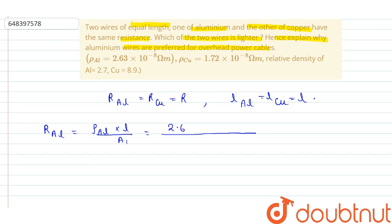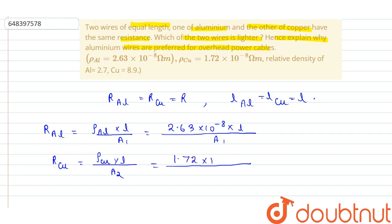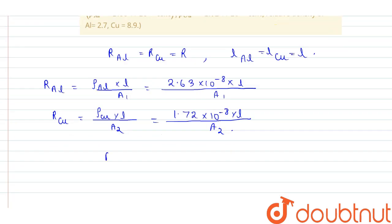For aluminum: R_al = ρ_al × L / A1 = 2.63 × 10⁻⁸ × L / A1. Similarly for copper: R_cu = ρ_cu × L / A2 = 1.72 × 10⁻⁸ × L / A2.